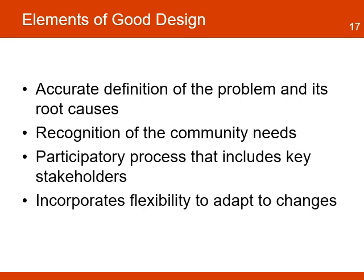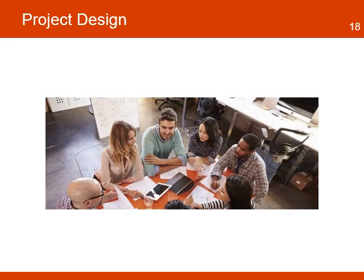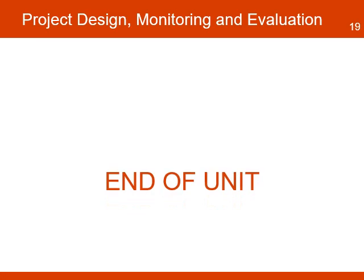The design of successful projects shows the following characteristics. They use an accurate definition of the problems and their root causes. They recognize community needs and include the participation of key stakeholders. It is not a rigid design — it incorporates flexibility to adapt the project to changes that occur in the environment. A good design increases the chances that the project proposal will be funded, that the plans will be implemented, and deliver the expected benefits. That is why it is important for the organization and the team in charge of the design to spend the necessary time and resources to design the project and ensure that it is feasible and can lead to sustainable results. But most importantly, to design a project with enough flexibility to adapt to the changing environment.